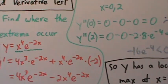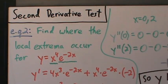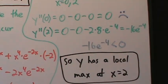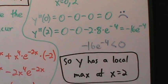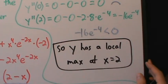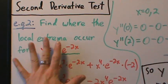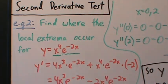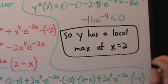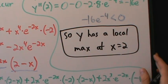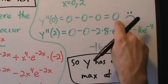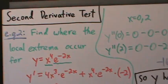This is one downside of the second derivative test: it can be inconclusive, and that's what happened here at x equals 0. We did all this work only to find we need the first derivative test anyway. But sometimes the second derivative test is much easier than the first derivative test. So we found a local max at x equals 2, and for x equals 0, the second derivative test is inconclusive — see example three in the next video.